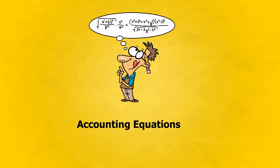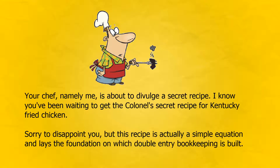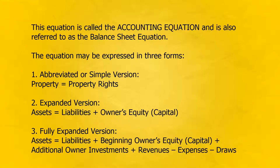Accounting Equations. Your chef, namely me, is about to divulge a secret recipe. I know you've been waiting to get the Colonel's secret recipe for Kentucky Fried Chicken. Sorry to disappoint you, but this recipe is actually a simple equation and lays the foundation on which double-entry bookkeeping is built. This equation is called the Accounting Equation, and is also referred to as the Balance Sheet Equation.